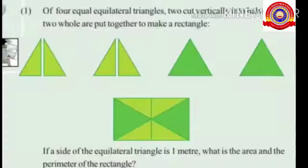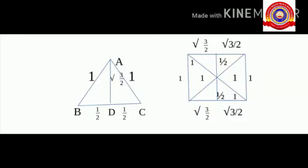Now read question number 1 in page number 57. The question says: 4 equilateral triangles cut vertically into halves, then put together to make a rectangle. The sides of these triangles are 1 meter. We have to find out the area and perimeter of the rectangle so formed. Let's start.